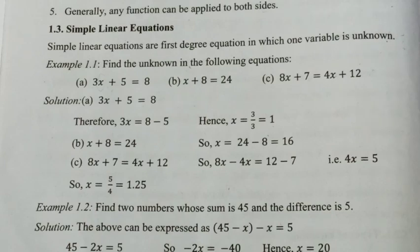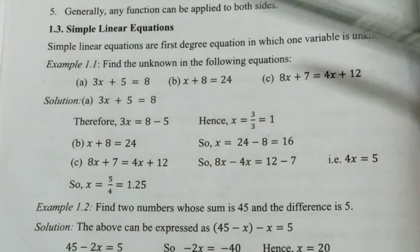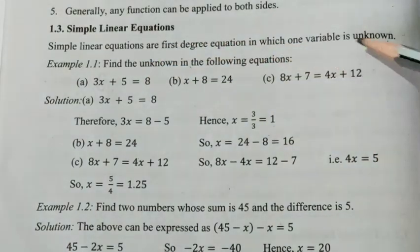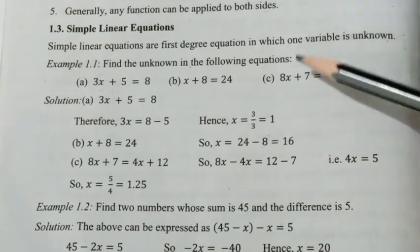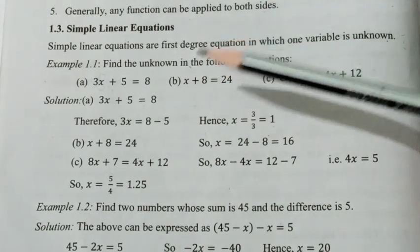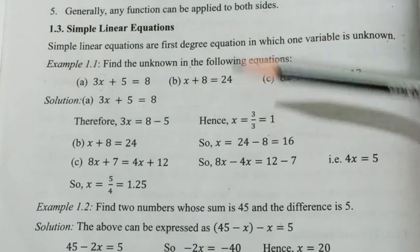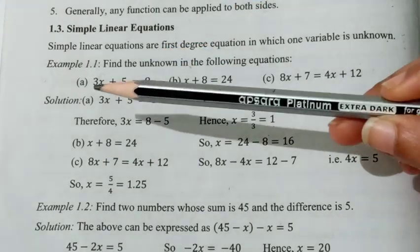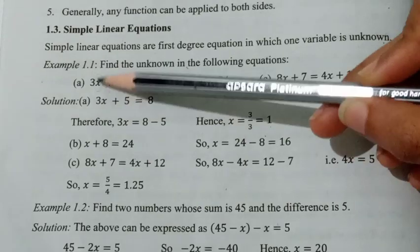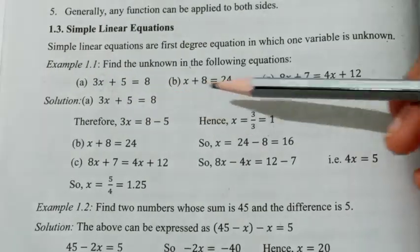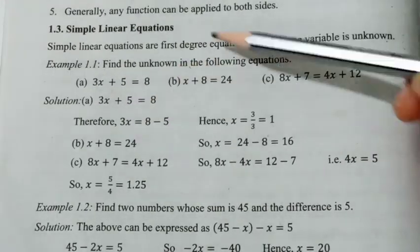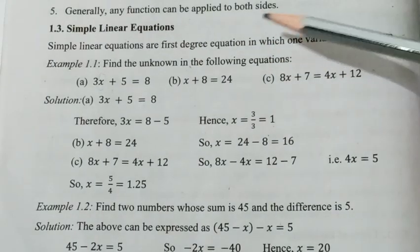Next is the simple linear equation. A simple linear equation is a first degree equation in which one variable is unknown. For example: 3x plus 5 equals 8, or 8x plus 8 equals 24 — these are simple linear equations with one unknown variable.